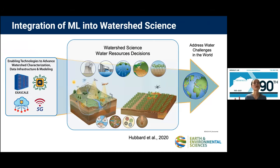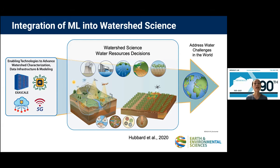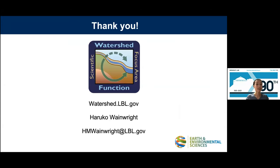Right now, we are integrating new technologies like exascale computing and edge computing through machine learning into watershed sciences, so that we can improve water resource prediction as well as decisions such as dam operation or water use in agriculture. We also believe that adopting machine learning and AI is critical to address water challenges in the world. Thank you very much.